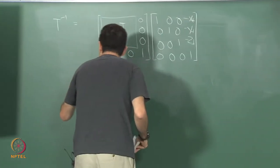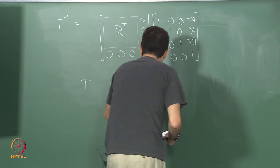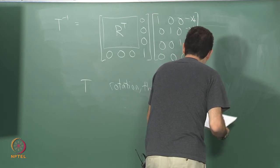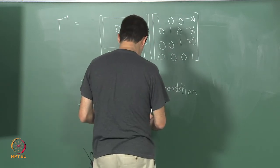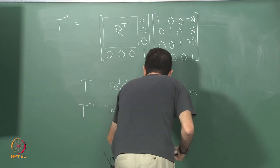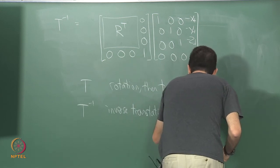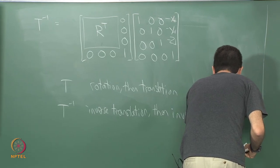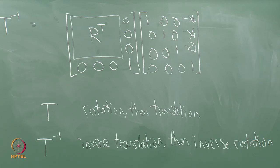Once again, to summarize: T is rotation then translation when applied to a point, and T inverse is inverse translation then inverse rotation. Okay, questions about that?